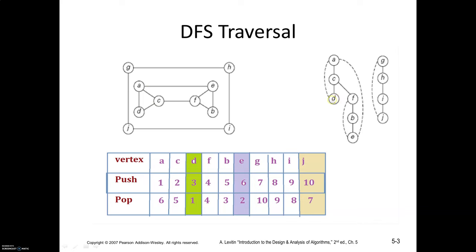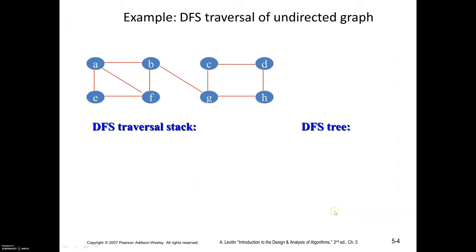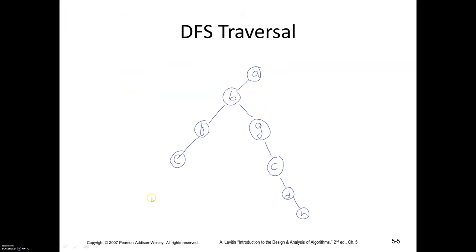When you traverse this graph, you redraw the graph as a tree. From A: C, D, then backtracking to C you explore F, B, E. The second component gives G, H, I, J. You get two disjoint trees, forming a forest. A set of disjoint trees is called a forest. Whenever you apply DFS and get a forest, the graph is a disconnected graph. If you get a single tree, the graph is a connected graph.